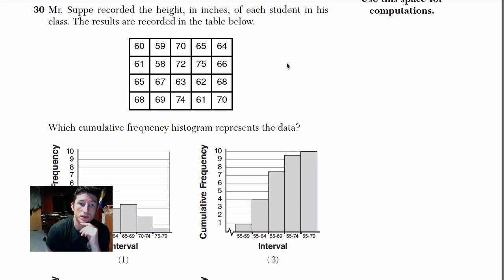It says, Mr. Supe recorded the height in inches of each student in his class. The results are recorded in the table below. So we got this giant table of heights, and they're asking us how do they organize it? And they're telling us, it actually says, which cumulative frequency histogram represents the data? So I'll give you a little hint. If it's cumulative frequency, it adds up the values from the previous categories, so all the graphs should be going up. The second you see cumulative, you've got to pick a graph where all the things are going up. Okay?